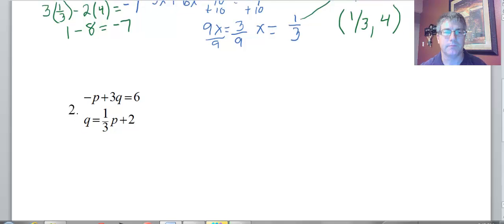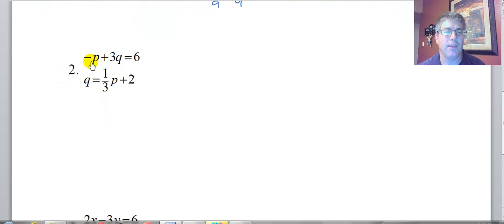So let's go on to another sample problem. We want to solve for P and Q. We'll solve for either one, but this one already has what Q is. We already know what Q is. Q is 1 third P plus 2. So I'm going to take 1 third P plus 2 and substitute it in for Q. So we have negative P plus 3Q, and Q is 1 third P plus 2, equals 6.